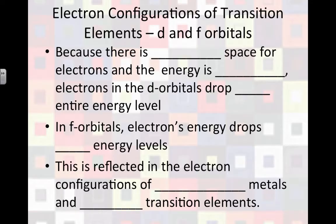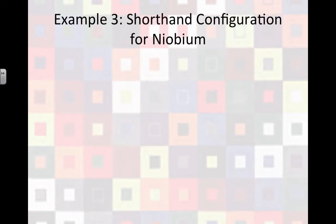Well, because of this space, the energy is going to be lower for electrons that are in the d orbital. So they drop one entire energy level from what the periodic table says. And in the f orbitals, an electron's energy drops two entire levels. This will be reflected in the configurations of the transition metals, the ones in the middle, and your inner transition elements that are down along the bottom of the periodic table printed separately.